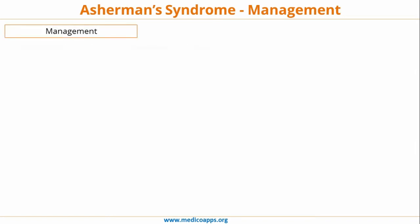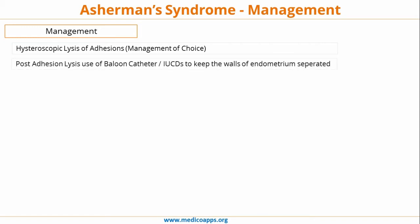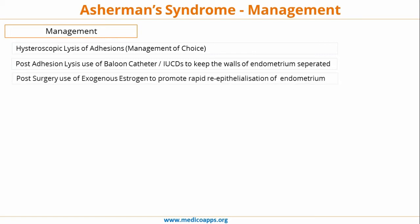For management, hysteroscopic lysis of adhesions is the treatment of choice — so hysteroscopy serves both diagnostic and therapeutic purposes. Post-adhesion lysis, a balloon catheter or IUCD is used to keep the walls of the endometrium separated so fibrous bands do not re-form. Exogenous estrogen is also used to promote re-epithelialization of the endometrium.